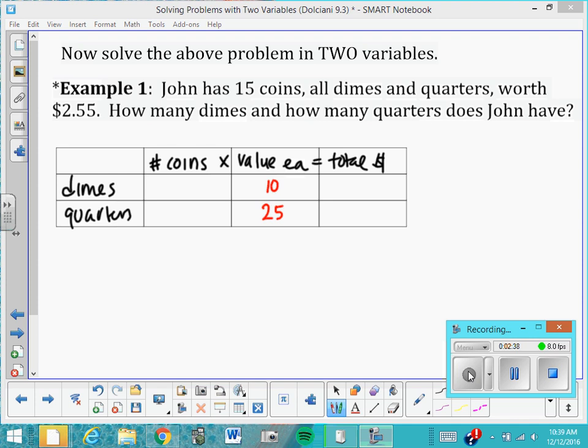And now when we go to set up the number of coins, we can say that we have x dimes and y quarters, or d dimes and q quarters, however you want to work it. And then the table works the same. If you have d dimes and they're worth 10 cents each, then your total amount of money in dimes is 10d, and your total amount of money in quarters is 25q.